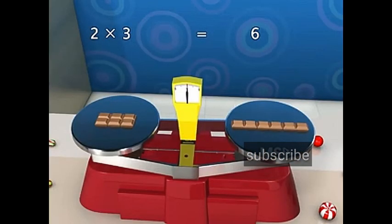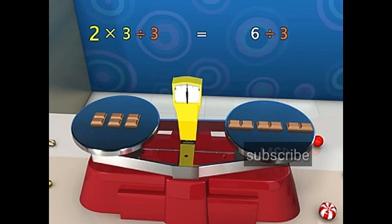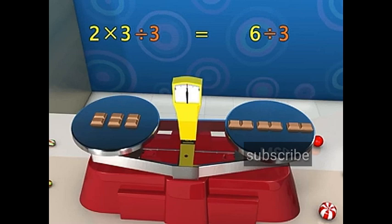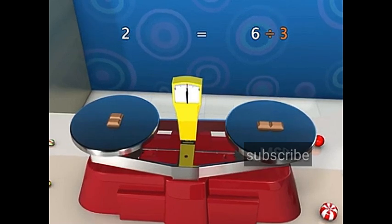If we divide both sides of the equation by 3, we get 2 into 3 by 3 equals 6 by 3. When we simplify this, we get 2 equals 2, which is correct.